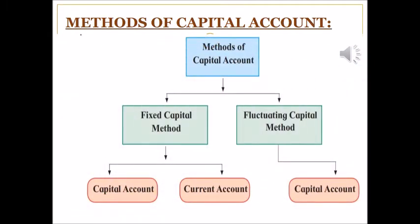In 11th Standard we studied Final Account: Trading Account, Profit and Loss Account, and Balance Sheet. Now this year in Partnership Final Account we have to study one more account — Partners Capital Account. Partners maintain their capital using two types: Fixed Capital Method and Fluctuating Capital Method.